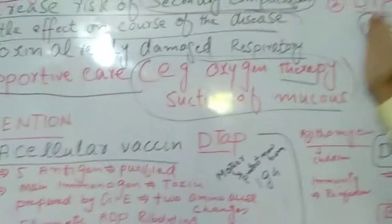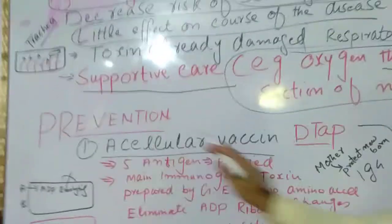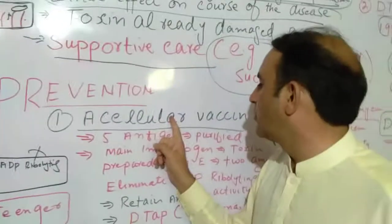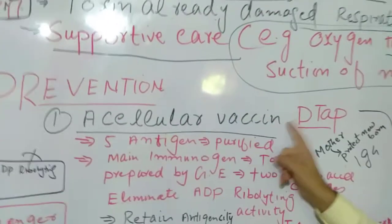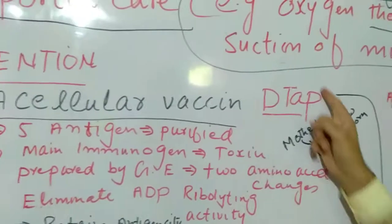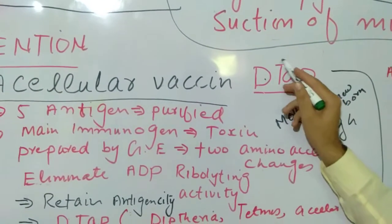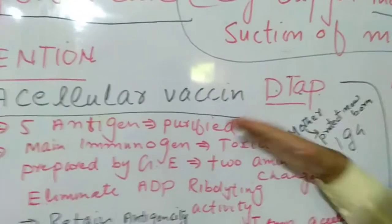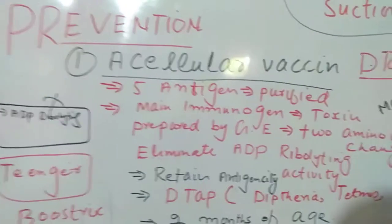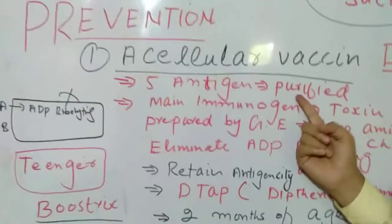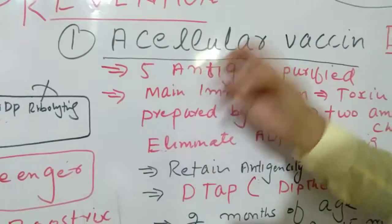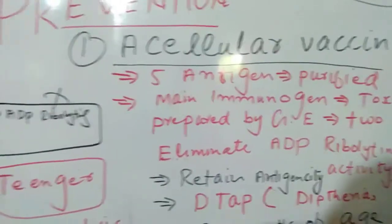For prevention, there are two types of vaccines available for whooping cough. The first vaccine is the acellular vaccine called DTaP — where D stands for diphtheria, T for tetanus, and aP for acellular pertussis. DTaP consists of purified antigens from the bacteria, and the main immunogen is the bacterial toxin.